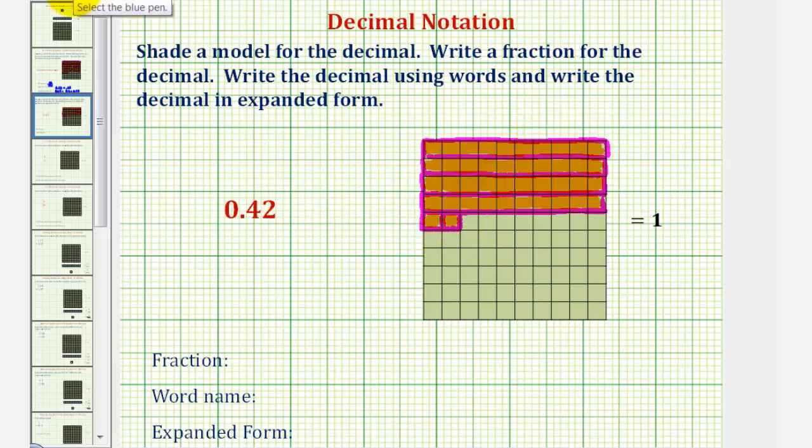Now we want to write this as a fraction. Let's first consider the denominator. Well 42 hundredths would have a denominator of 100, because notice the ten by ten grid cut or denominates one whole into 100 equal partitions. And then because we counted or enumerated 42 of those small partitions, our numerator is 42.